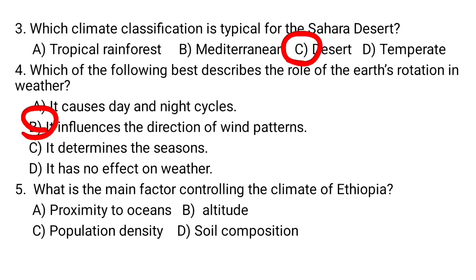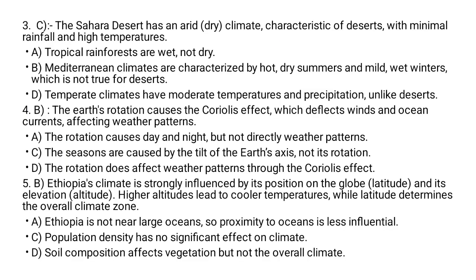Altitude is the main controlling factor of the climate of Ethiopia — B is the correct answer. Ethiopia is not well known for proximity to oceans, so that is less influential. Population density has no significant effect on climate, and soil composition affects vegetation but not the overall climate.